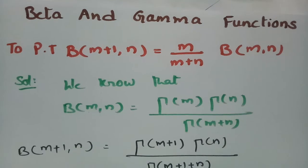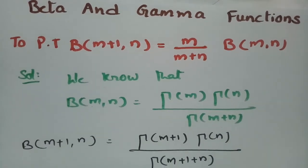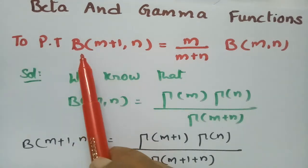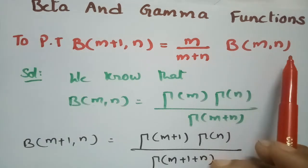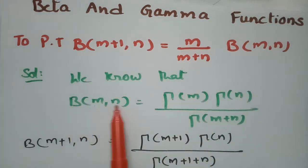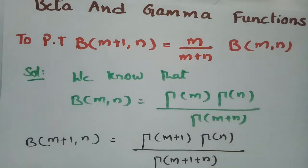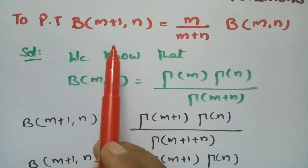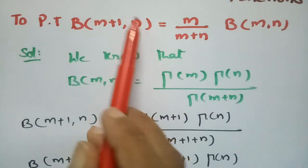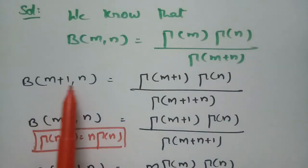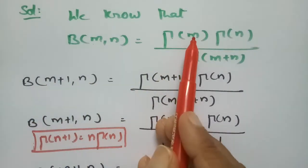This question is from beta and gamma functions and is most repeatedly asked. It is simple: beta of m plus 1 comma n can be written as m by m plus n into beta of m comma n. We know that beta of m comma n equals gamma m into gamma n by gamma of m plus n. So we start with beta of m plus 1 comma n and substitute m plus 1 in place of m.